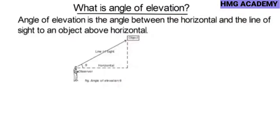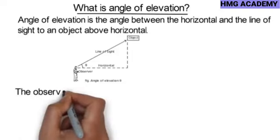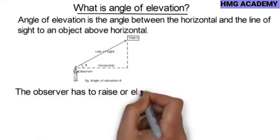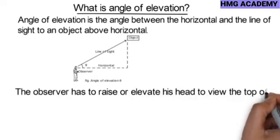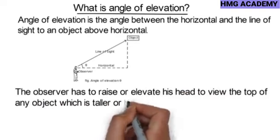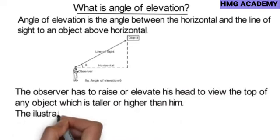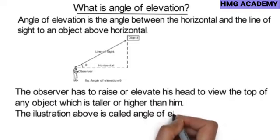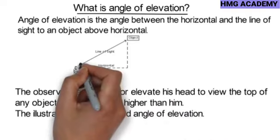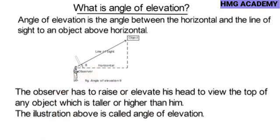Let's take a look at the diagram below. You can see a man looking up at an object — you can see the line of sight and the horizontal line. The observer is the person looking, and the observer has to raise or elevate his head to view the top of any object which is taller or higher than him.